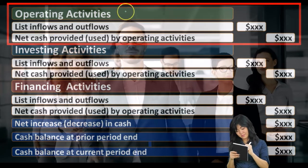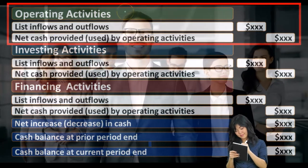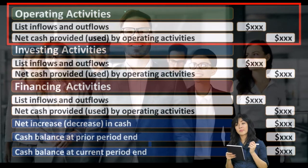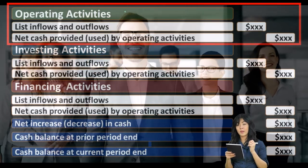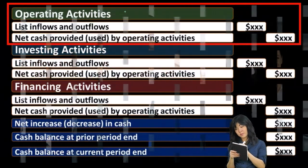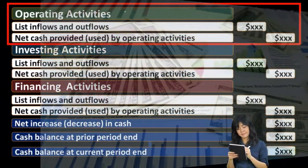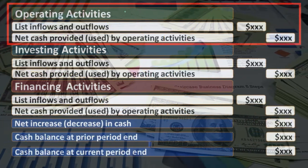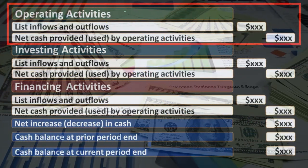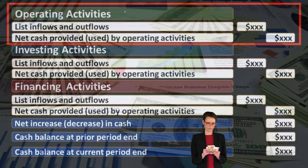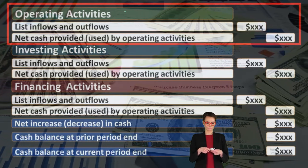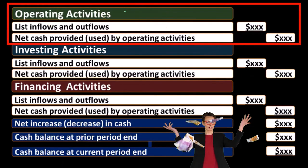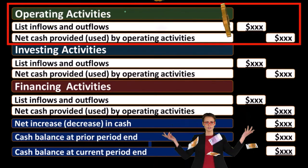The direct method makes more intuitive sense because it's similar to going through the income statement line by line and fixing it — so that sales or revenue would be reported on a cash flow basis rather than on a revenue recognition accrual basis.